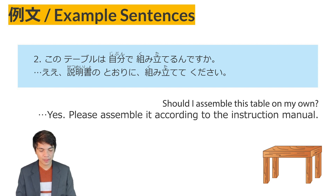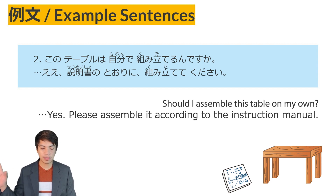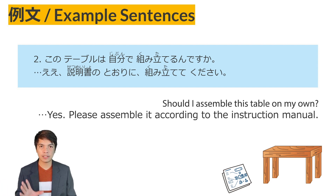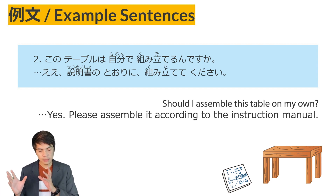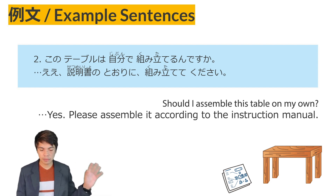Example sentence number two: Kono teeburu wa jibunde kumitaterun desu ka? E, setsumeisho no tori ni kumitatete kudasai. This shows another way of using the tori ni pattern. This time it's noun no tori ni — for nouns, use the particle no. Noun no tori ni means the same way as the noun, following it when doing verb 2. Here, setsumeisho no tori ni — following the instruction manual — kumitatete kudasai, please assemble it.